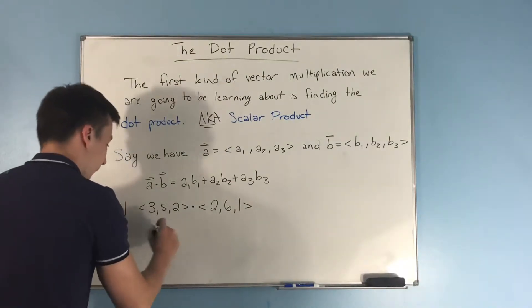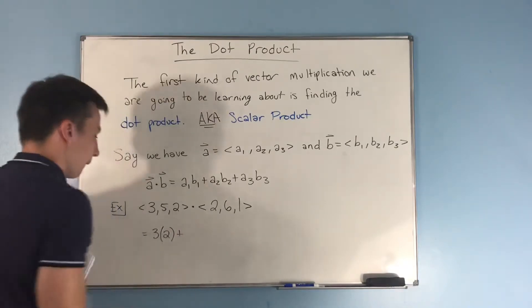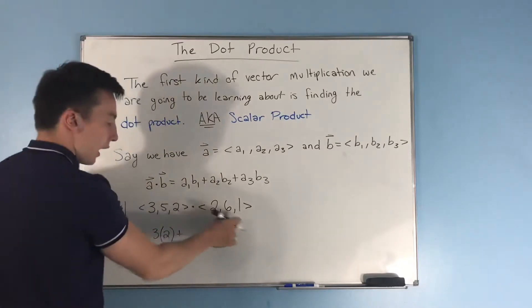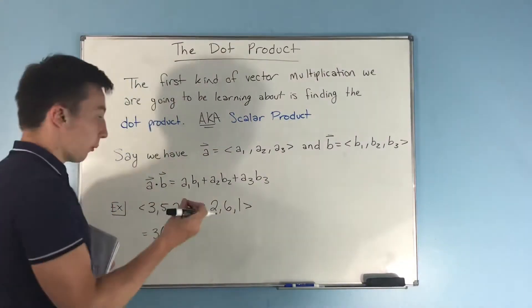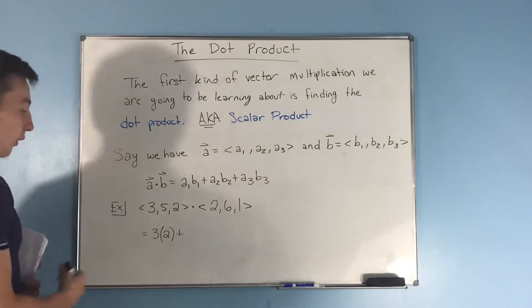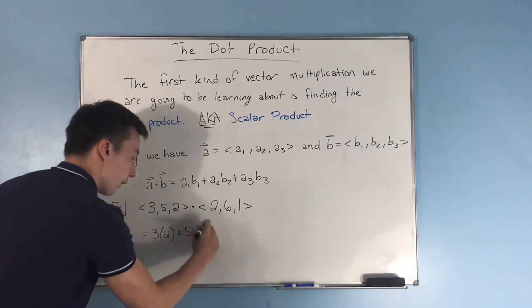I'll write it out for you: this equals 3 times 2. We're going to add our second set of components, a₂ and b₂, multiply those together and add that to our answer. So we have 5 times 6, and then we